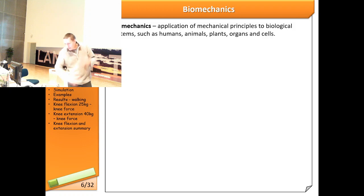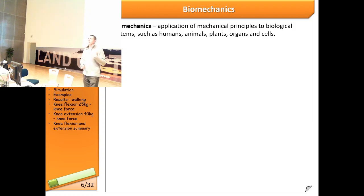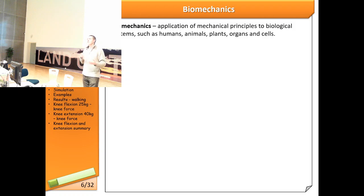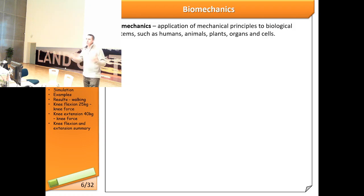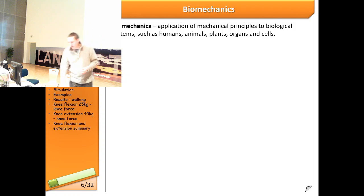The definition of biomechanics is the application of the principles of mechanics to biological structures — animals, humans, or even cells. You can study biomechanics at the cell level, looking at tiny structures inside the body, or at the macro scale, examining bones, muscles, and other large tissues.